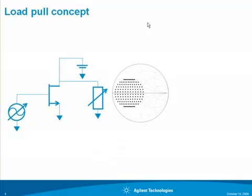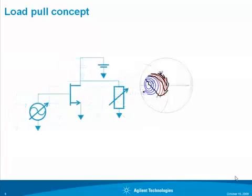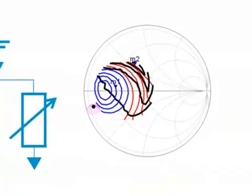How do we run constant power delivered load pull simulations in ADS? We vary the load in some region of the Smith chart, and for each load, we adjust via an optimization the available source power until the desired power is delivered. In post-processing, we generate contours for different performances of interest.